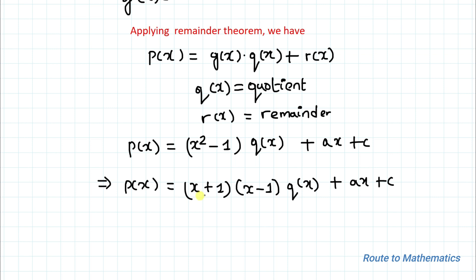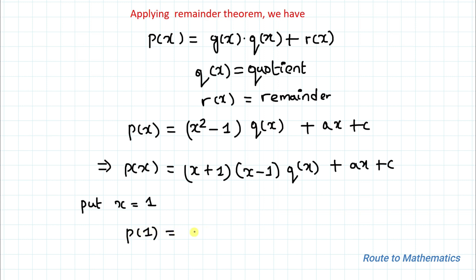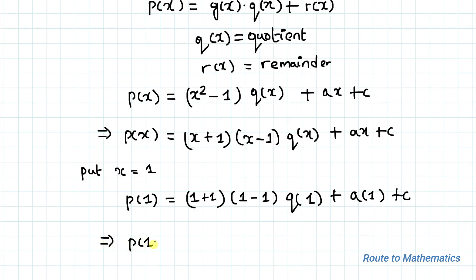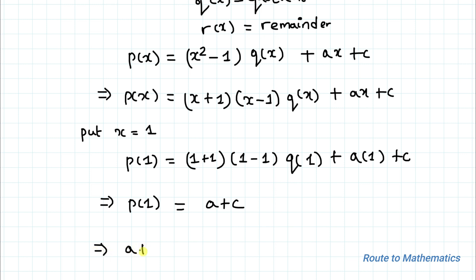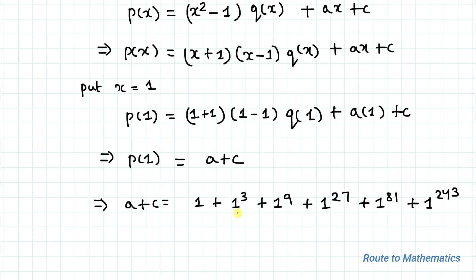Since we have two factors, let's put x = 1. Our equation becomes p(1) = (1+1)(1-1) · q(1) + a + c. Since (1-1) = 0, the first term vanishes, giving us a + c = p(1) = 1 + 1 + 1 + 1 + 1 + 1. Since 1 to any power is 1, we get a + c = 6. Let's call this equation 1.